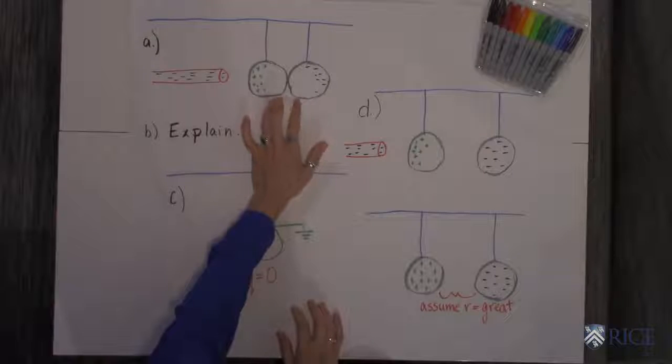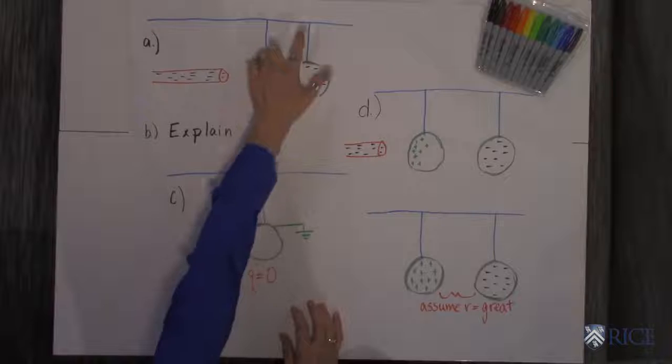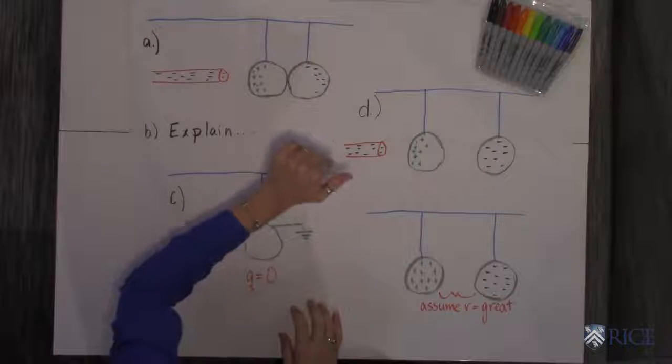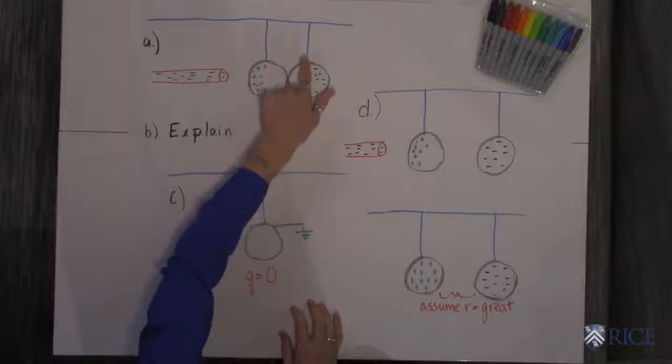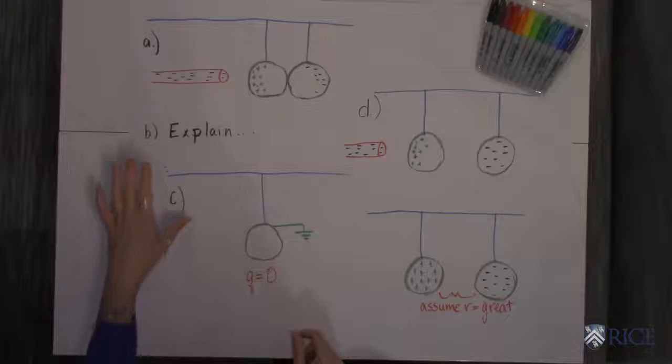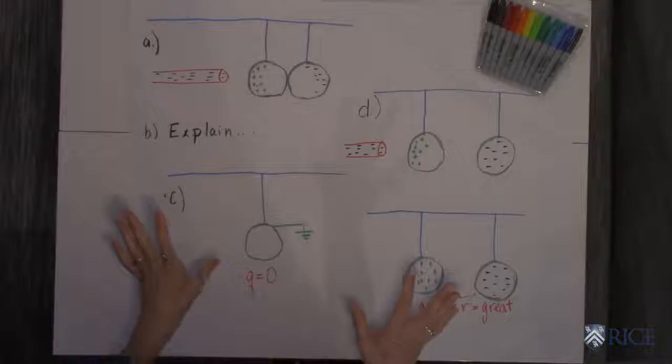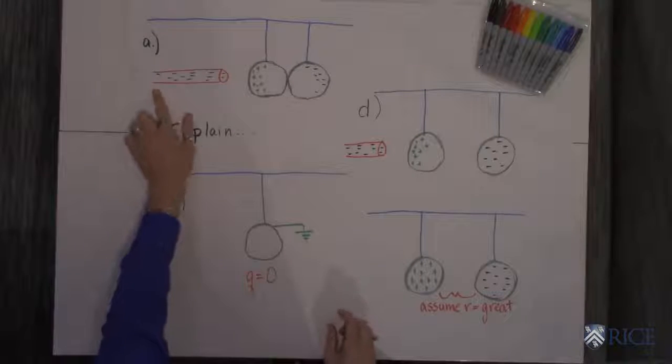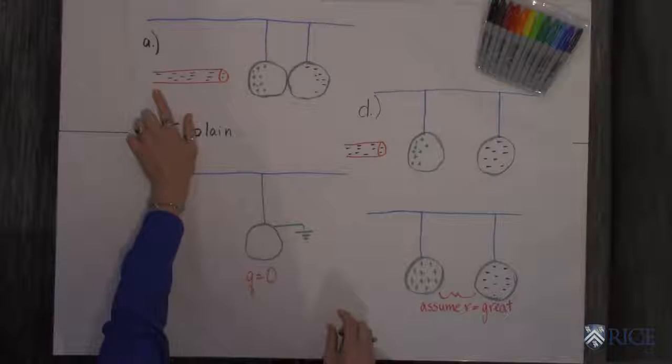We're going to talk a little bit about what happens if you have two metal conductors and they're hanging. The problem doesn't exactly state it, but we're going to assume that it's hanging from an insulator. They're initially uncharged and what happens if you bring a charged metal rod next to them?